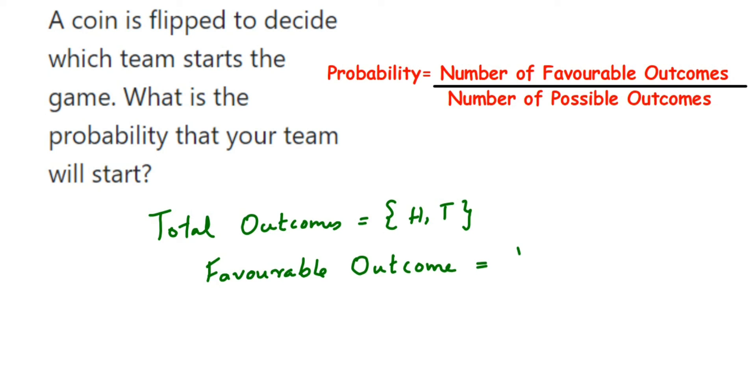So probability will be equal to... the total favorable outcomes will be one out of two. So the probability is one by two (1/2). It's a very simple question. This can come for one mark, like fill in the blanks or just to solve.